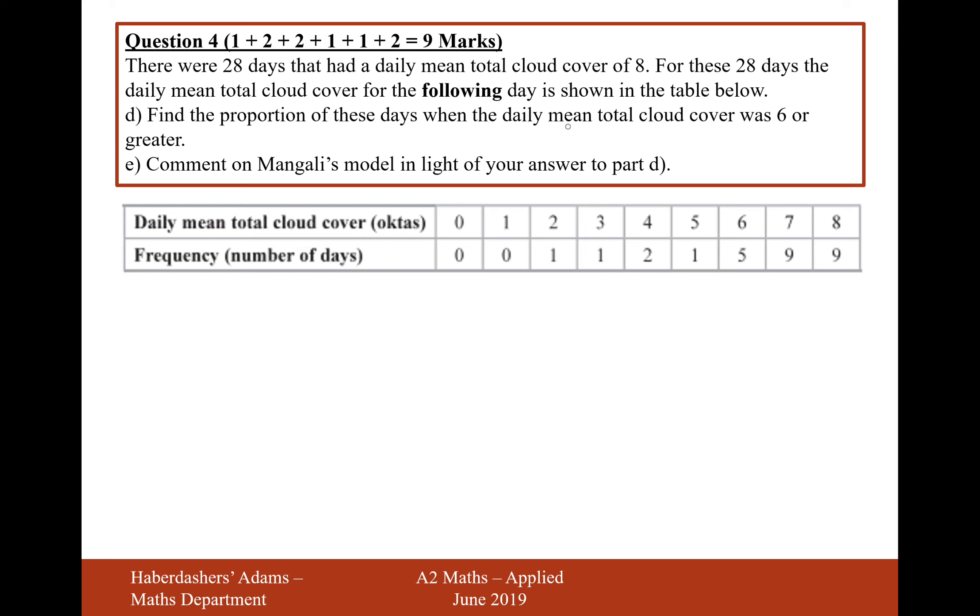Find the proportion of these days where the daily mean total cloud cover was 6 or greater, so probability of x being greater than or equal to 6, that's going to be 5 plus 9 plus 9 over the total. The total there was 28, wasn't it? So let's do that on the calculator. 5 plus 9 plus 9 divided by 28, and that gives us an answer of 0.82. 0.821, which is different from previously.